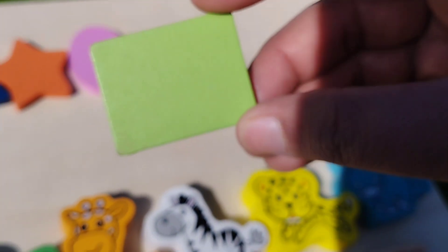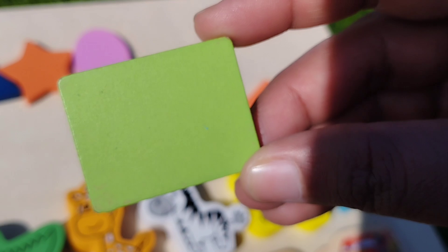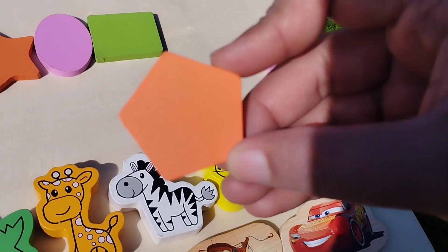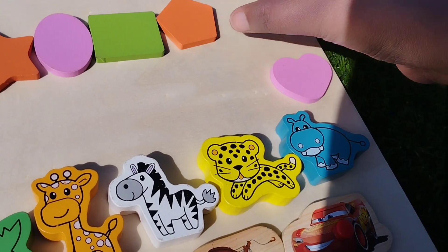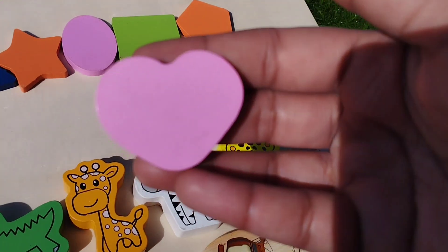The next one is rectangle. This is rectangle shape. Pentagon. This is pentagon shape. Heart.